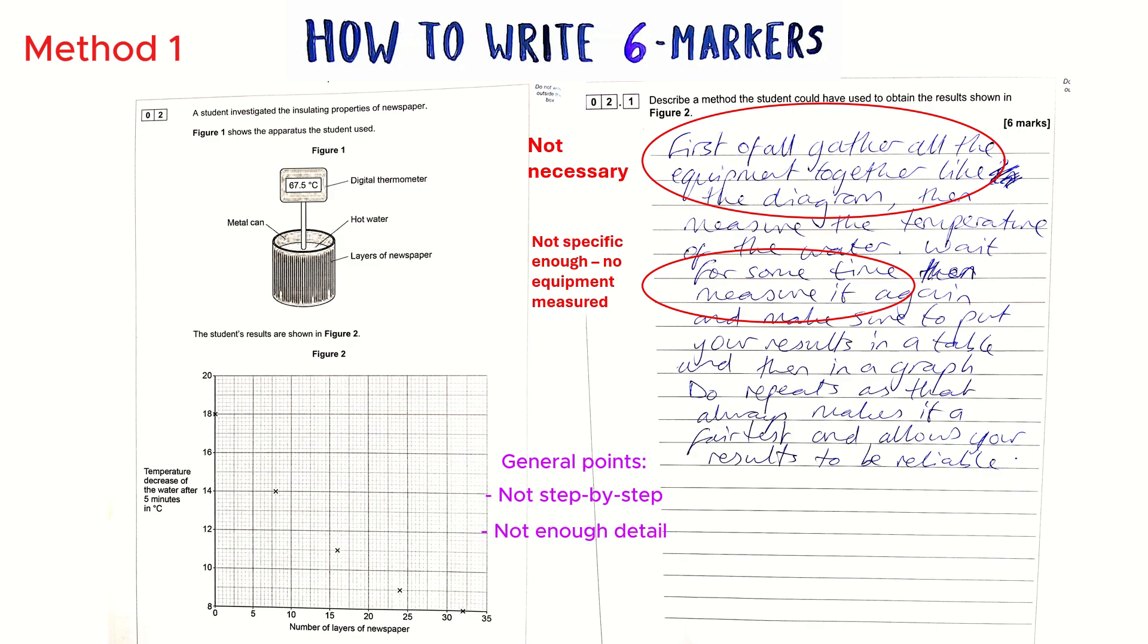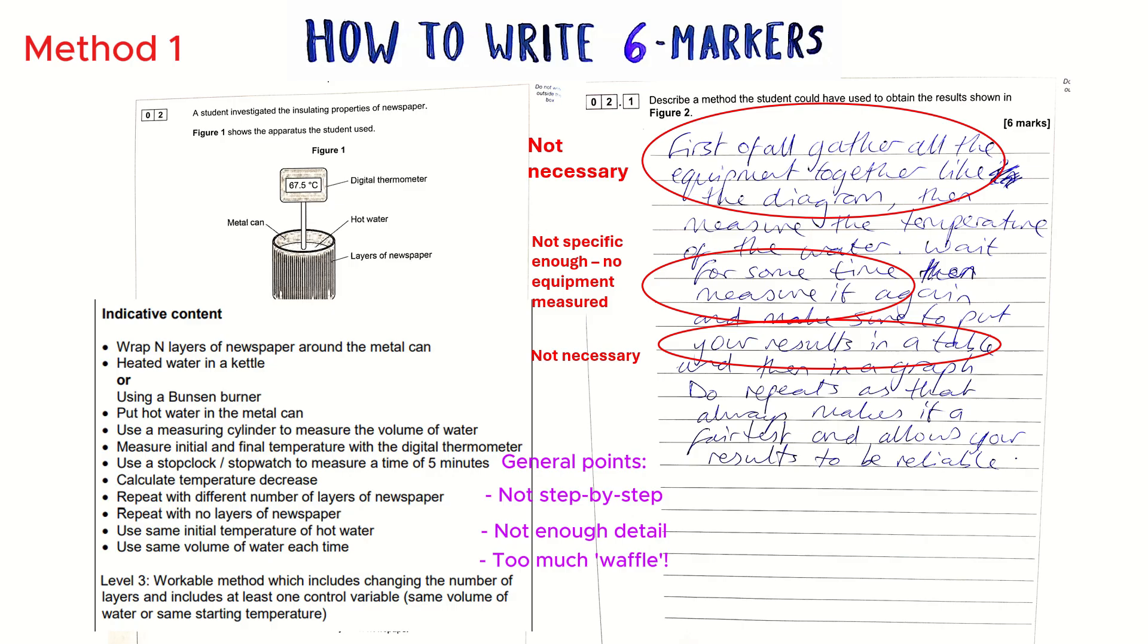They talk about waiting some time but don't say how much time to wait and how to measure it. They talk about measuring results and putting them in a table and a graph. You don't need to mention those. It's not wrong but the graph is already there for you. While repeats are always useful, you haven't really said what you're repeating. So actually this method would be zero marks. If you look at the mark scheme there's lots of things we could hit here which we haven't talked about.